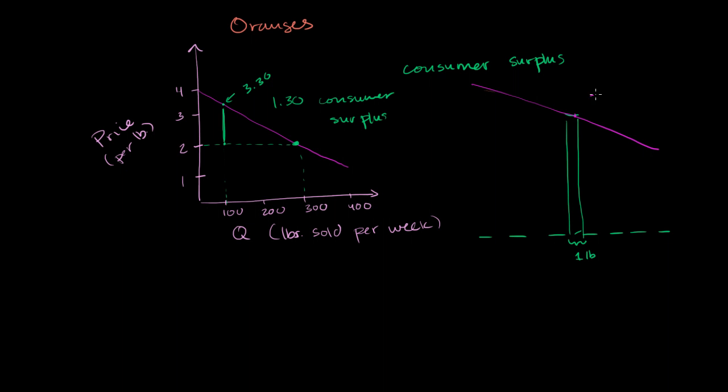And this point right over here was $3.30. And so to figure out the consumer surplus for that pound, we said, okay, for that pound, they were willing to pay $3.30. The benefit to them was $3.30, but they only had to pay $2.